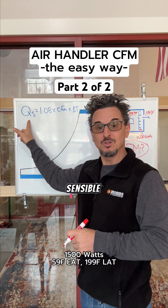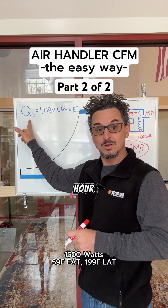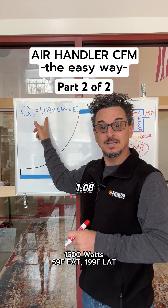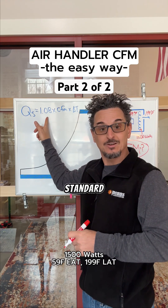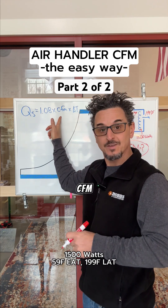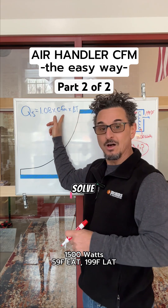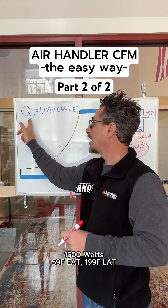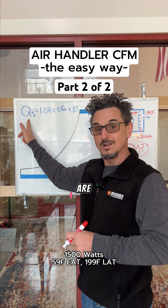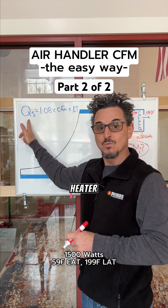QS is the sensible heat, or the BTUs per hour, which equals 1.08 at standard air conditions at sea level, times CFM, times delta T. We're going to solve for CFM and determine what the BTUs per hour are from the electric heater wattage.